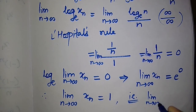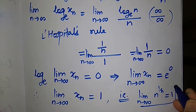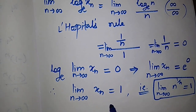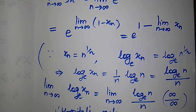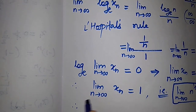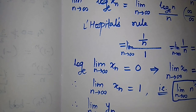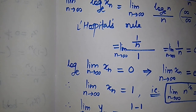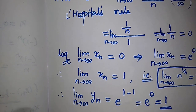So lim n^(1/n) = 1. Substituting this value back, the limit of yₙ = e^(1 - 1) = e⁰ = 1. This is the answer.